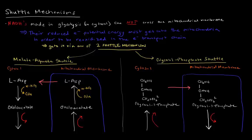Their reduced electron potential energy needs to get into the mitochondria so that they can be re-oxidized by the electron transport chain to make ATP. But the NADHs can't cross the mitochondrial membrane. So how do we get their reduced potential energy into the mitochondria? The way we do that is via one of these two shuttle mechanisms.